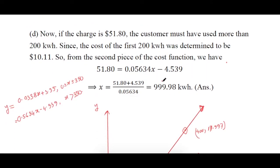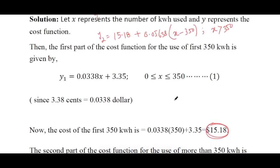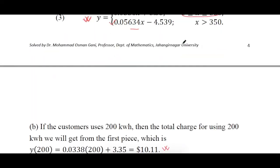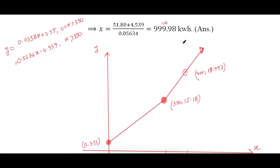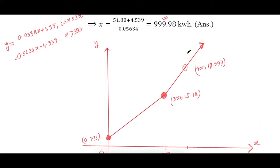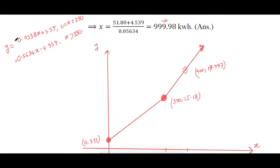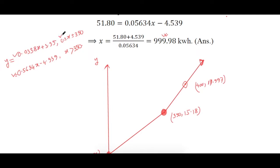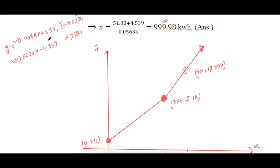The graph of the cost function consists of two lines. The first line starts at x = 0 and ends at x = 350, and the second line continues from there. You need two points to draw the first line. The starting point is (0, 3.35).